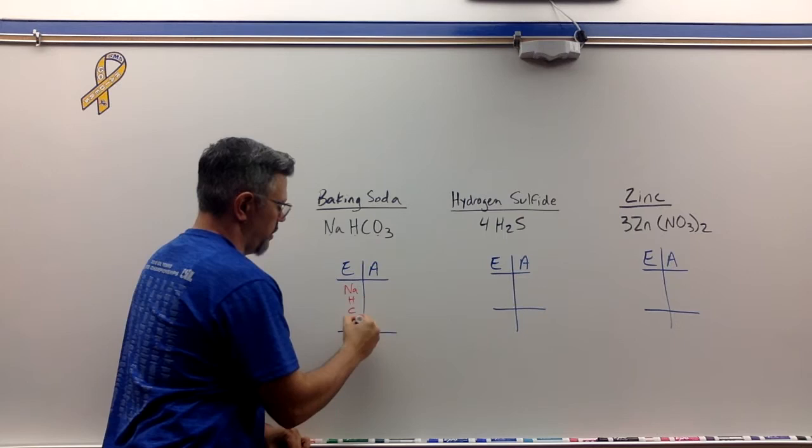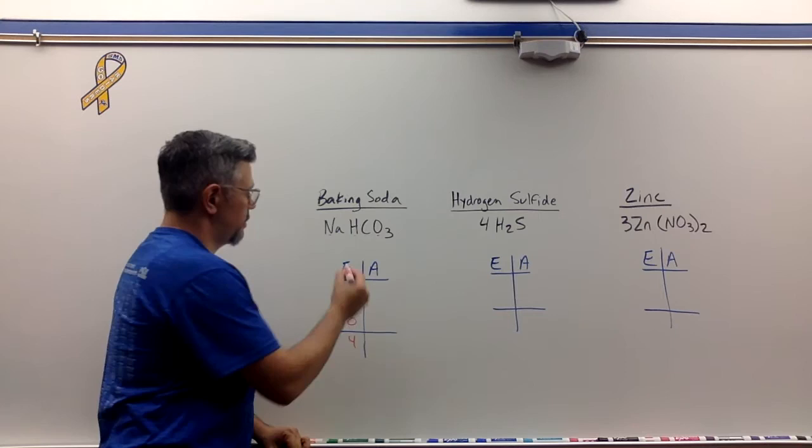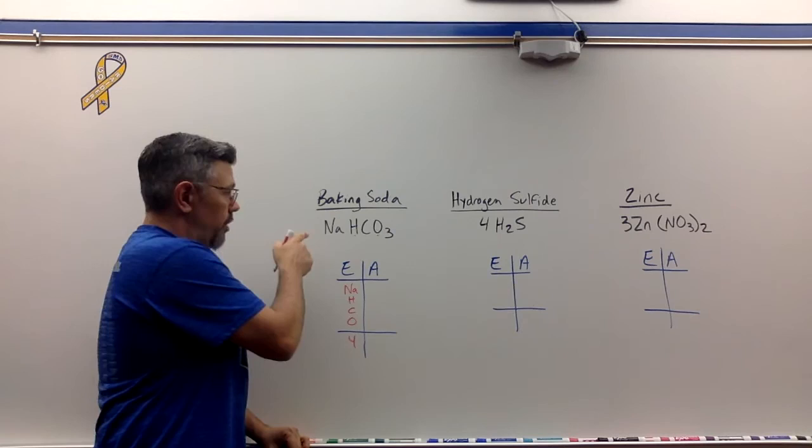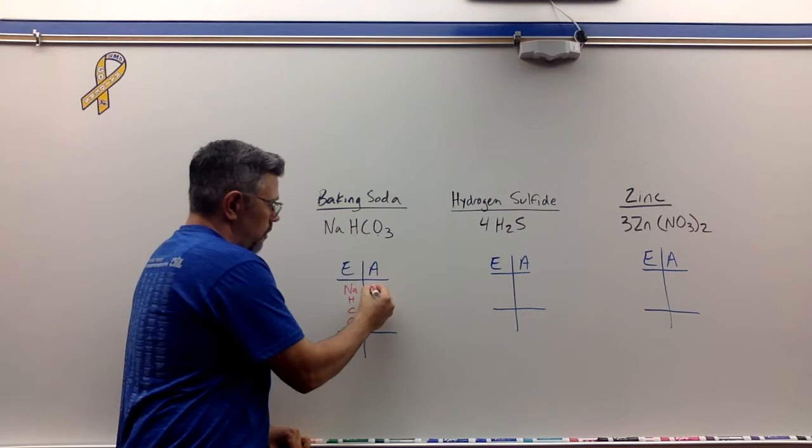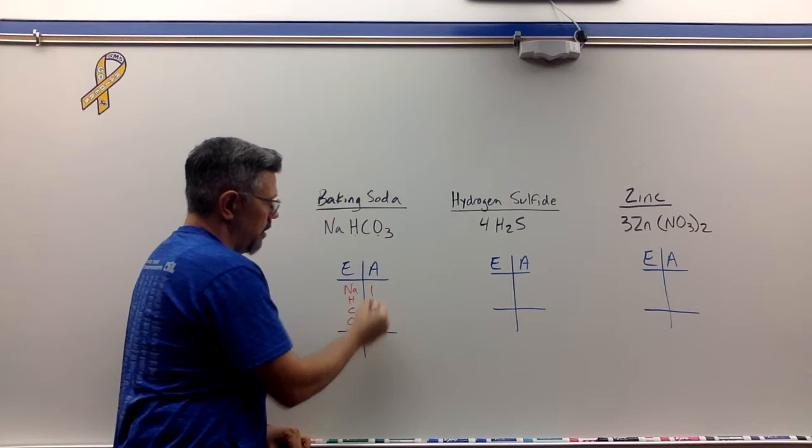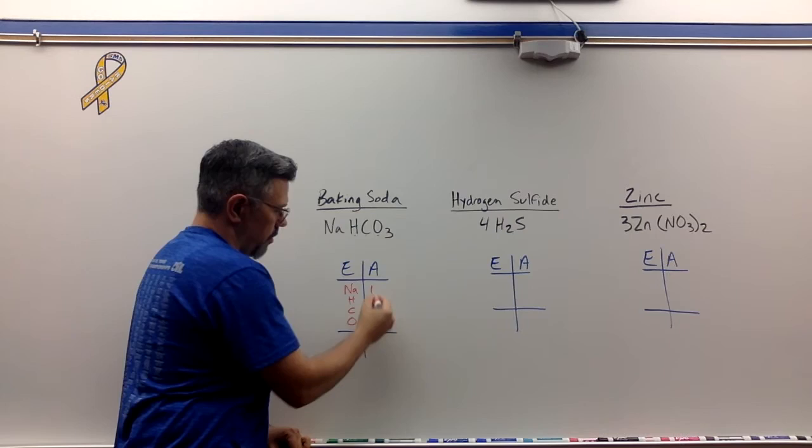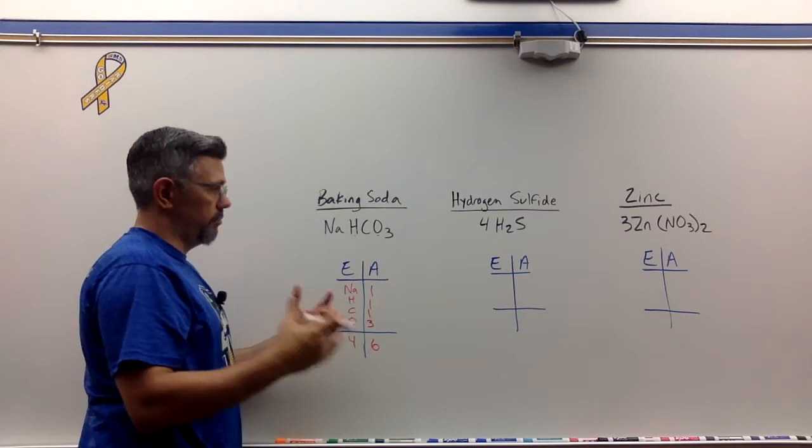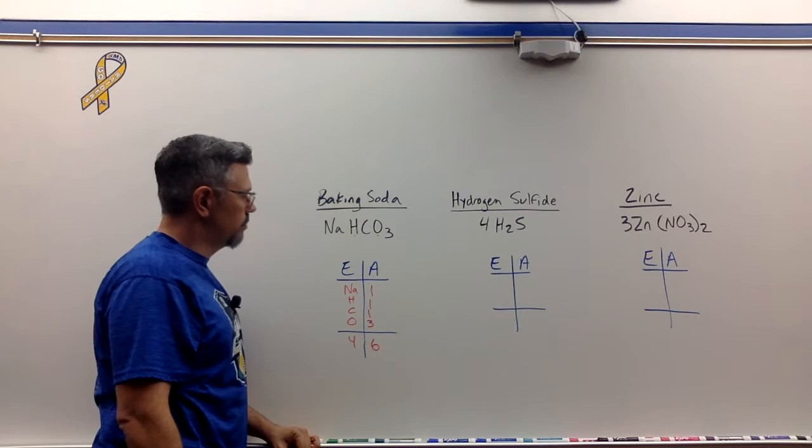Okay, so let's start counting. Remember, there's no coefficient. So if there's no number here, we assume one. We have one Na, we have one H, we have one C, and we have three O's for a total of six atoms in this molecule, and in this case compound as well. So that one's done.